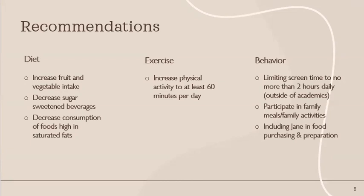For diet, I would recommend increasing fruit and vegetable intake. It has been shown that households with more fruits and vegetables are associated with higher intake of these foods and a lower BMI, while unhealthy foods in the house are associated with higher intakes of fast food. I would also recommend decreasing sugar-sweetened beverages — in Jane's food diary she often consumed Coke products or sweetened tea — and decreasing consumption of foods high in saturated fat, including limiting fast food restaurant visits.